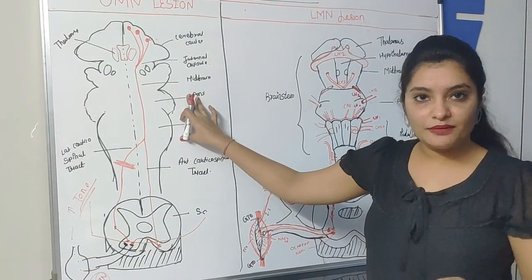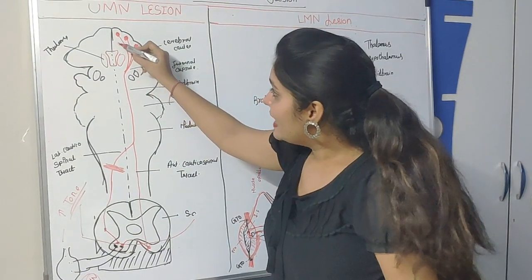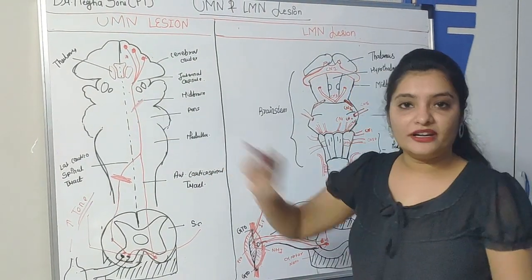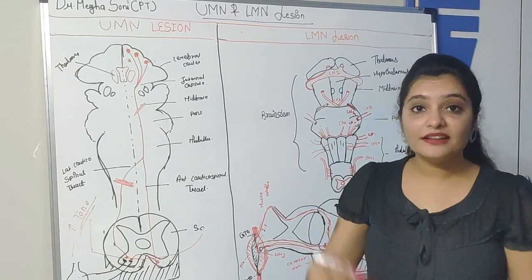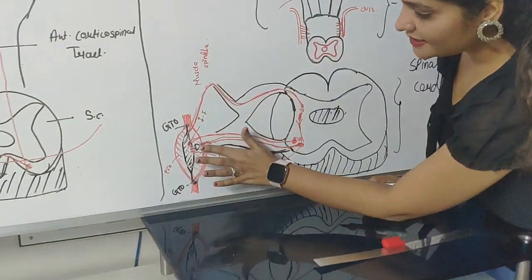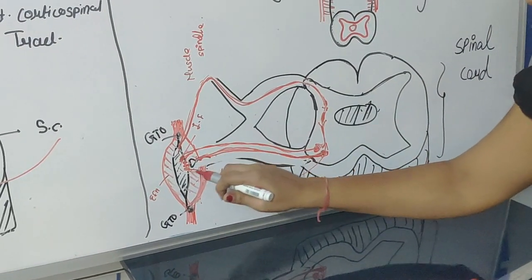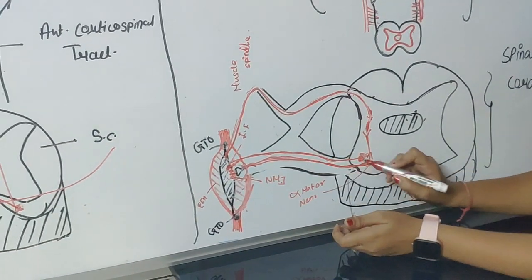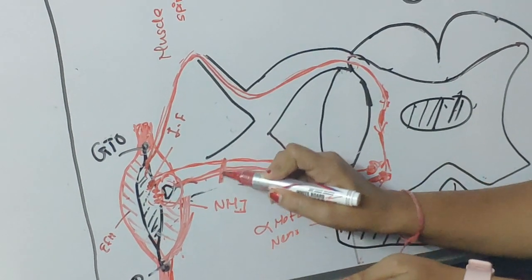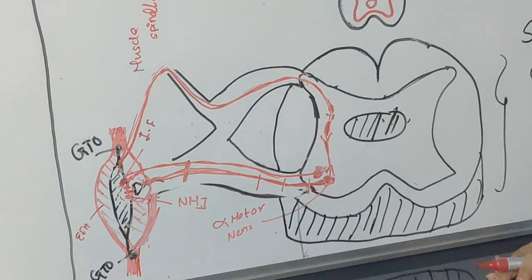UMN type of lesion does not mean damage above the spinal cord only — it is totally related to the corticospinal tract. Damage to the cerebral cortex, midbrain, pons, or medulla can directly damage the corticospinal tract, giving UMN type of symptoms. In LMN type of lesion, any damage between the cell body nuclei, through the root, rami, cord, branches, up to the neuromuscular junction will lead to LMN type of lesion.